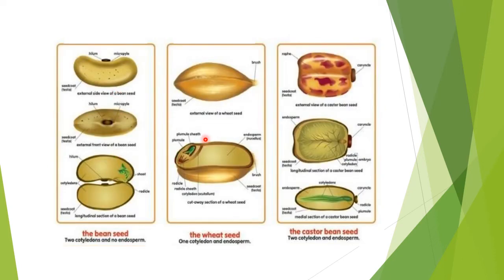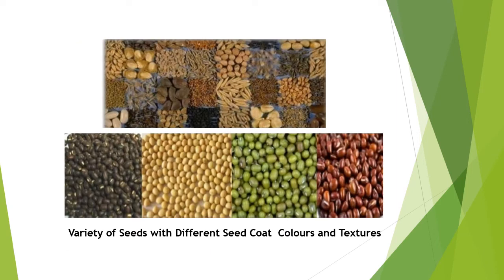The bean seed has two cotyledons and no endosperm because food is stored in the cotyledons. The wheat seed has one cotyledon and endosperm. The castor bean seed has two cotyledons and an endosperm. So seeds can be endospermic with cotyledons, or only endospermic with the food stored in the endosperm.